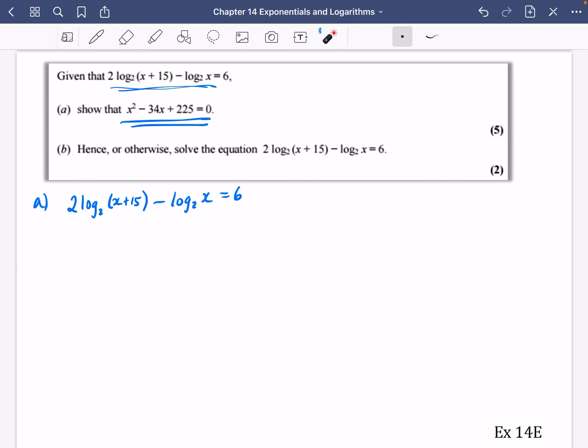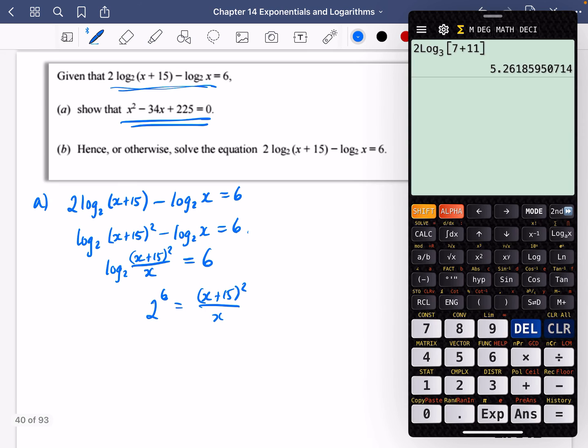Well, I need to first of all deal with this 2 that's hanging out the front here and put it in the power. So it's going to be log base 2 of (x+15)² minus log base 2 of x equals 6. Now, I can combine them using the subtraction law. So it's (x+15)² over x equals 6. So we're saying the power of 2 that gives me (x+15)² over x is 6. And 2 to the power of 6, I believe, is 64.